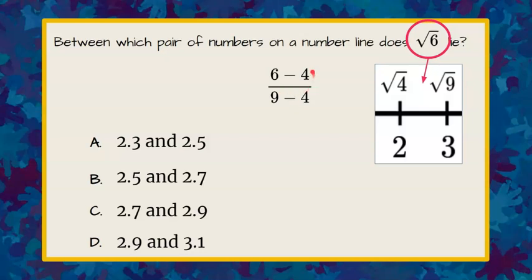So again, these are the radicands. The radicand that we are looking to round to the nearest tenth subtract the radicand of the smallest square root it's closest to, and our denominator is the difference of the two radicands of the perfect squares that it lies between.